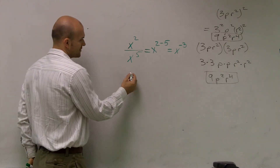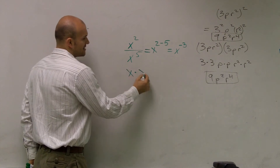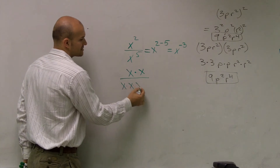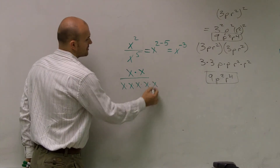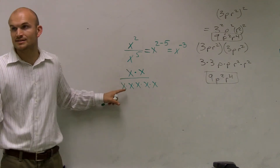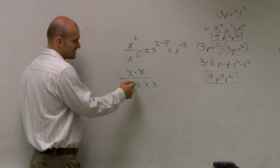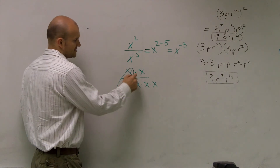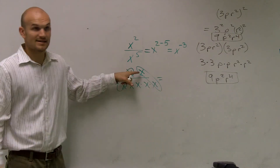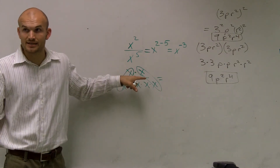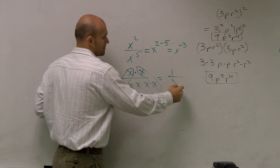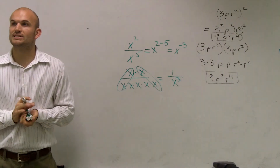One thing I want to show you is: if I write x times x — which is x squared — all over x to the fifth, which is x times x times x times x times x, does everybody follow? This is x squared over x to the fifth. If I cancel these out — I cancel these two, and I cancel these two — there has to be a 1 up top; you can't just delete it. So there's a 1 on top over x times x times x, which is x by itself three times.